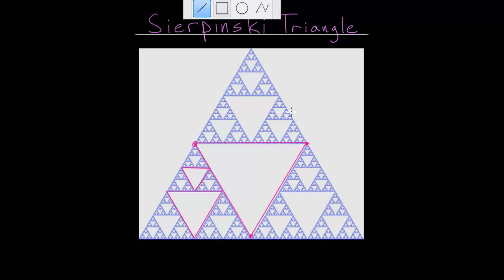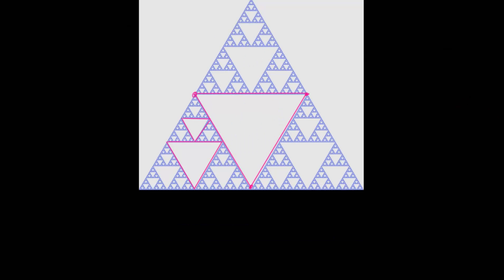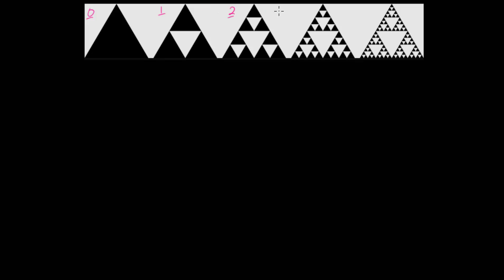After this process is carried out infinitely many times, the question is: what is the area of this object? How much space does this triangle actually occupy? To answer that question, we need to think about this step by step. Let's look at the process for actually creating this triangle — we can call this step zero, step one, step two, step three, and so on.